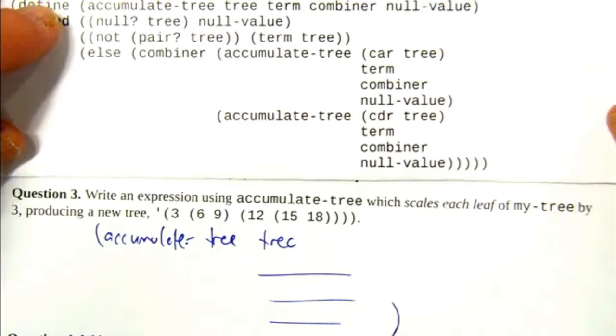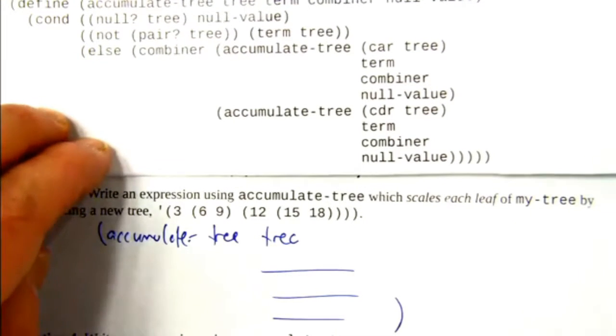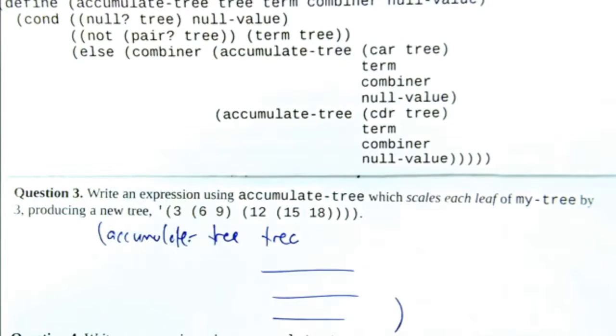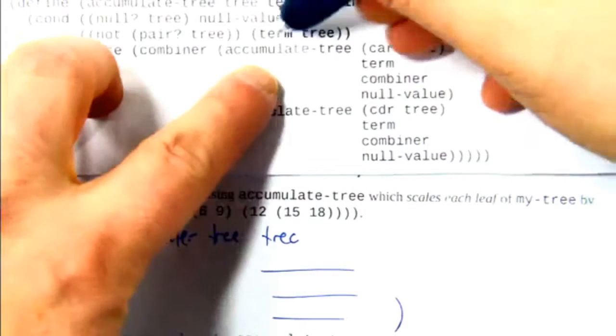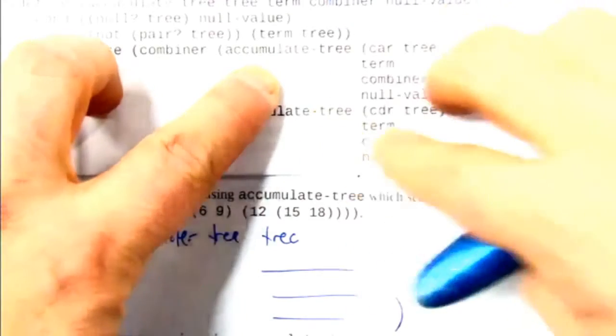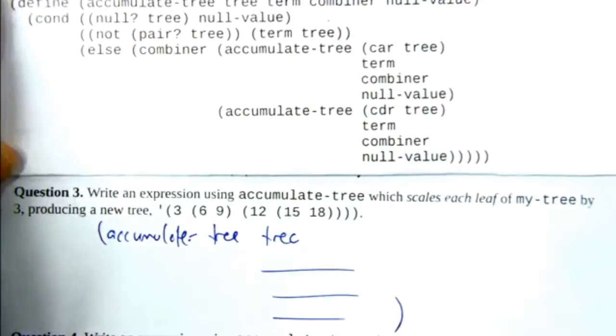Okay, the first parameter is the term which transforms the leaf. So what is that going to be? So what sort of thing is it? It's a procedure. So it's a procedure that operates on tree, which at this point in the execution we know that tree is a number. So it's going to do the scaling.